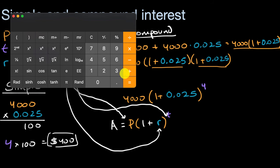So this is going to be the total amount that I have. But now let me subtract the original principal to see how much I have earned in interest. So minus 4,000 equals $415.25. So the amount earned is $415.25.